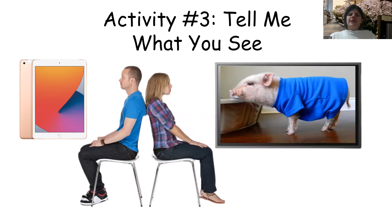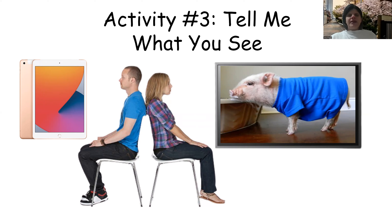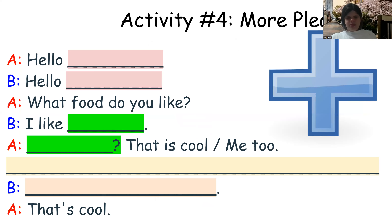Another activity is 'tell me what you see.' There's a girl looking at the TV and a boy holding an iPad looking in the other direction. The girl has to communicate what she sees to the boy, who will draw it. They have to use negotiation of meaning to communicate what's going on, and they also use CSs.